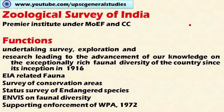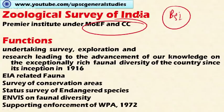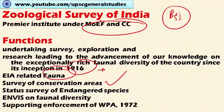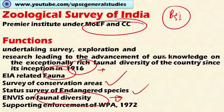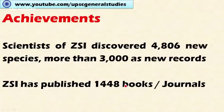The Zoological Survey of India is also a premier institute under the Ministry of Environment and Forest and is the counterpart of the Botanical Survey of India. It undertakes survey, documentation, and taxonomic studies of animal species, and was established in 1916, before independence. It also undertakes environmental impact assessments related to fauna, surveys of conservation areas, and status surveys of endangered species. It maintains an environmental information system on the diversity of animal species to support policy formulation and conservation strategies, and supports enforcement of the Wildlife Protection Act 1972.